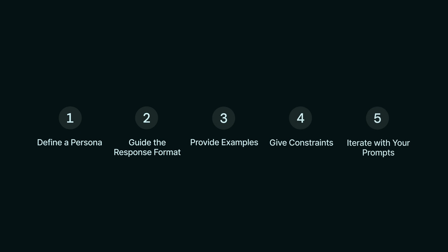So by defining a persona, guiding the response format, providing examples, constraints, and iterating on your prompts, you can significantly improve the quality and relevance of the AI's output. AI loves context — whether that's extra knowledge from relevant data in your app, PDFs, or accompanying materials of any kind. With the way you can build and chain things together in Glide, you can really provide this context much more than a simple chat message in a chatbot.